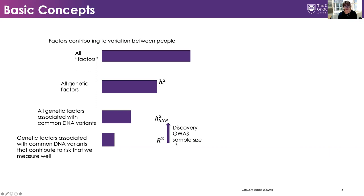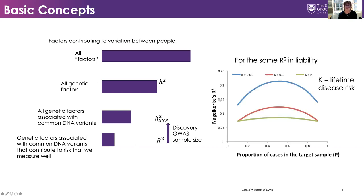Our expectation is that as sample sizes increase, the polygenic prediction R-squared value will get closer to the SNP-based heritability. A small word about R-squared: we're used to variance explained by a regression. With a binary trait it's more complicated, and we have the Nagelkerke R-squared statistic. One problem with this statistic is that it actually depends on the proportion of cases in the sample. All points on these lines explain the same variance in liability, but the Nagelkerke estimate depends on the proportion of cases.